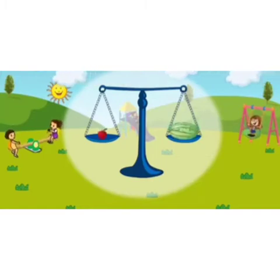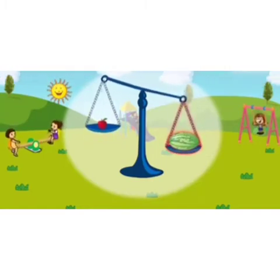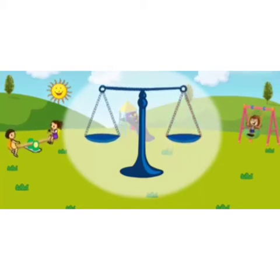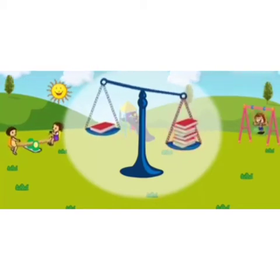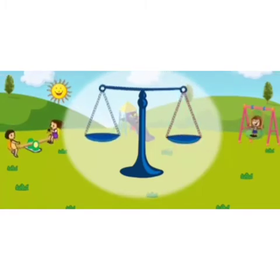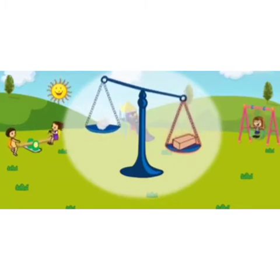An apple is light and a watermelon is heavy. A book is light and six books are heavy. Same as, a piece of cotton is light and a brick is heavy.